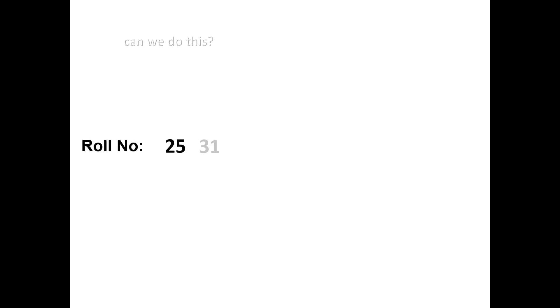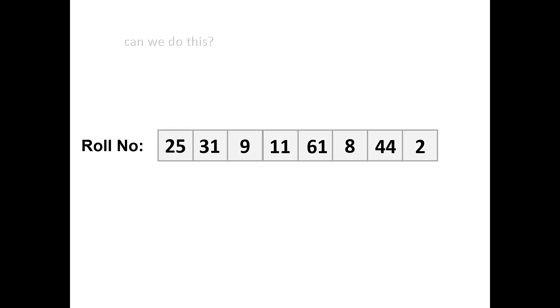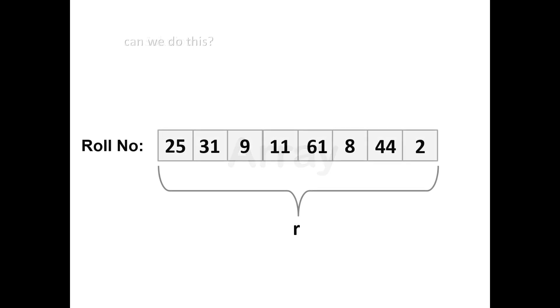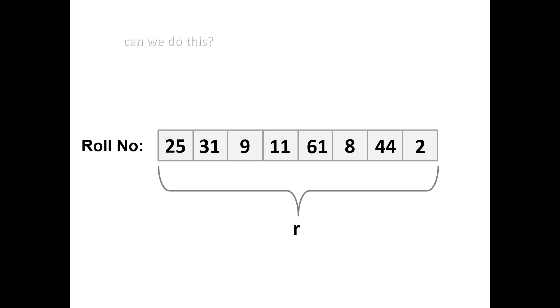So what do we do? Can we create a single variable storing all the roll numbers — one single variable which can store multiple values? Yes, that's what an array is — the solution to this problem. Going back to this: R is one variable which can store multiple values, storing all the values within the same variable R. That is known as an array in the C programming language.